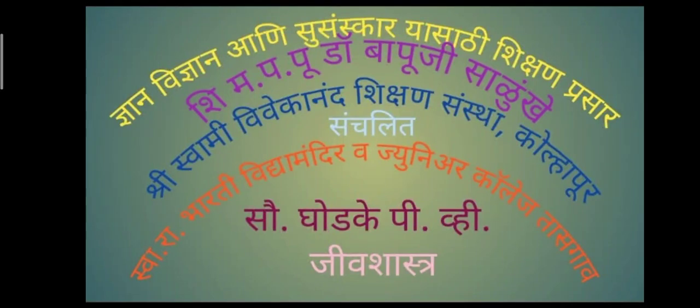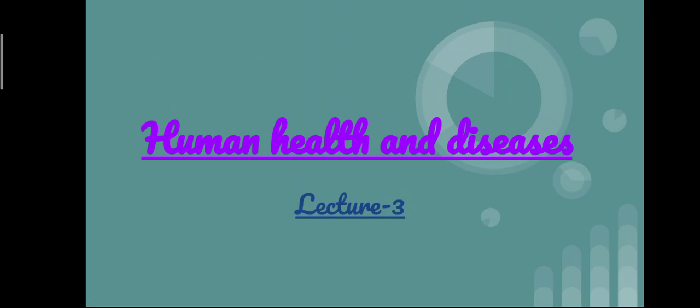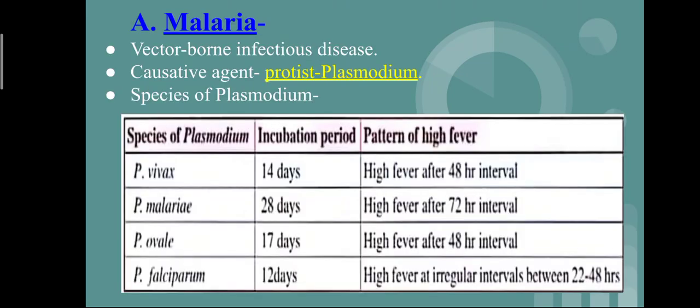Hello students, today we study a new topic from Human Health and Diseases. The diseases we will cover are Malaria, Amoebiasis, Ascariasis, and Filariasis. We will continue with Malaria first — it is a vector-borne infectious disease caused by a protist.